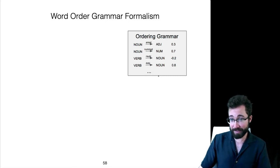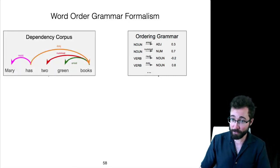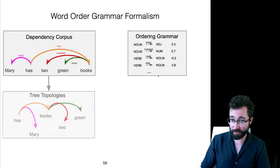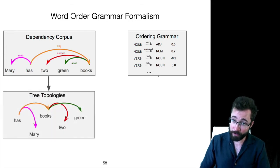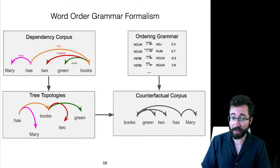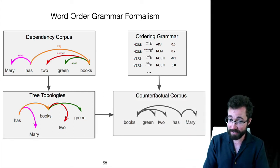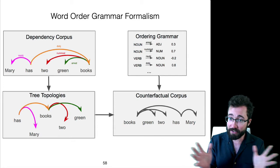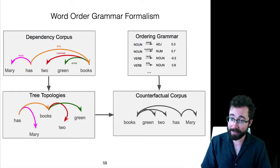With a word order grammar like this, you can then take an actual dependency corpus of a language, reduce it to unordered dependency trees, and then use that order grammar to linearize those trees so you can say what would the strings in this language look like under that potential word order grammar.